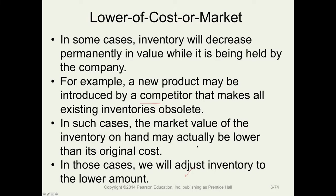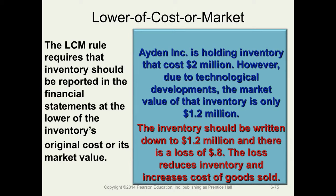The LCM rule requires that the balance sheet reflects the lower of cost or market. For example, Aiden Incorporated is holding $2 million of inventory, but due to technological developments, the market value of that inventory is $1.2 million. The inventory needs to be written down by $0.8 million to its market value, and that loss will flow through the cost of goods sold. In some cases, the loss is written off directly on the income statement as a separate line item, but here we assume the loss flows through cost of goods sold. Let's see how to record the loss due to an LCM write-down.